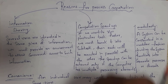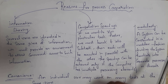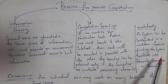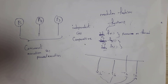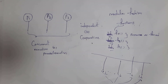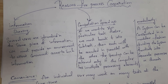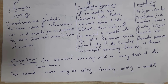The third reason is modularity. A system can be constructed in a modular fashion by dividing the system functions into separate processes or threads. For example, the functions present in a system are divided into processes or threads — this is known as modular fashion. The fourth reason for process cooperation is convenience: each and every user will work on multiple tasks at the same time, and for that purpose we need process cooperation.